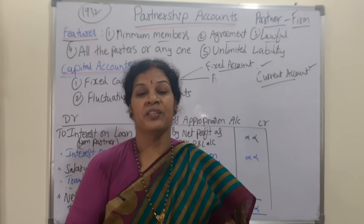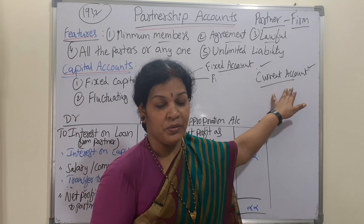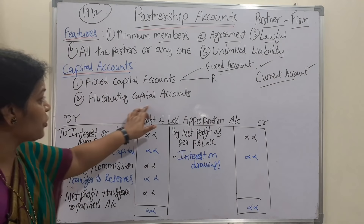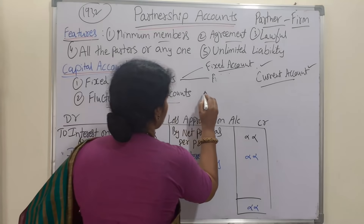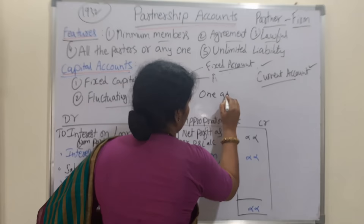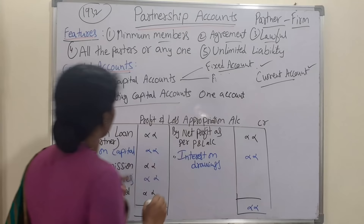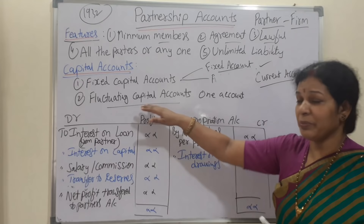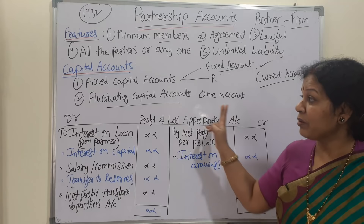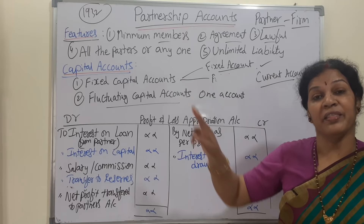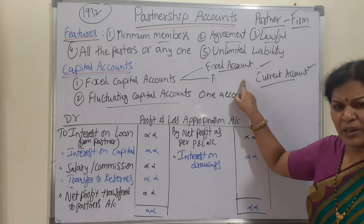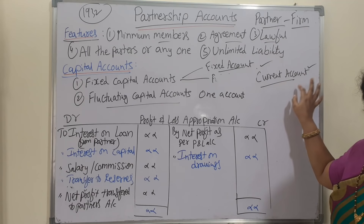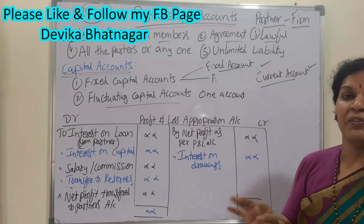Under the fluctuating capital account method, we have only one account. In this single fluctuating capital account, we write the capital and all kinds of adjustments together. So under the fixed capital method we prepare two accounts — a fixed account and a current account — while under the fluctuating capital method we prepare only one account.